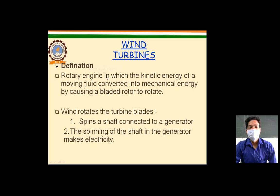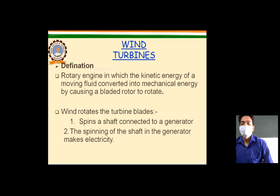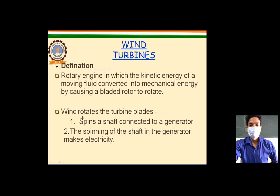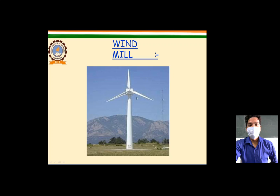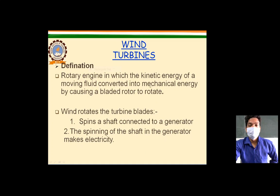A wind turbine may be defined as a rotary engine that converts the kinetic energy of moving fluid into mechanical energy by causing a rotor to rotate. The blades are mounted on the shaft; when air strikes the blades, the shaft also rotates. This results in the conversion of kinetic energy into mechanical energy.